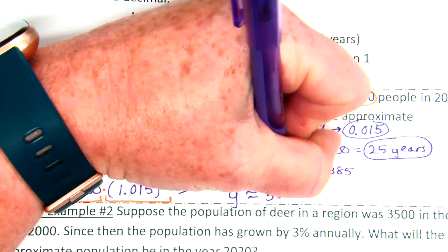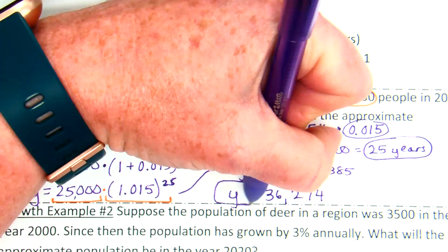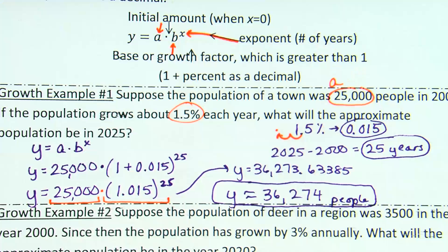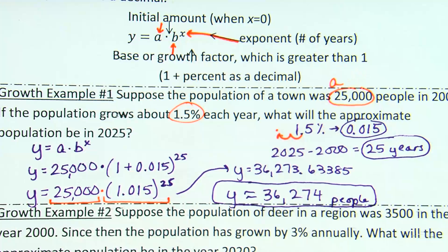I mean, can we have a .6th of a person? No, I would say go ahead and round up. So, 36,274. And that is people. Okay.